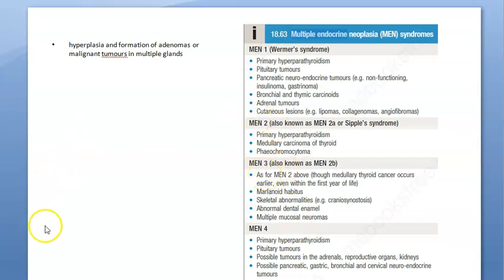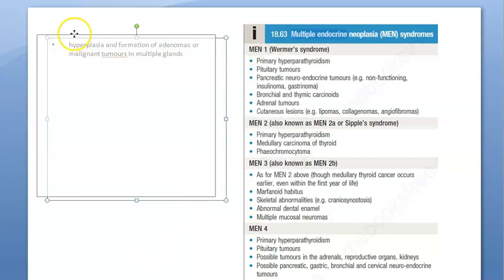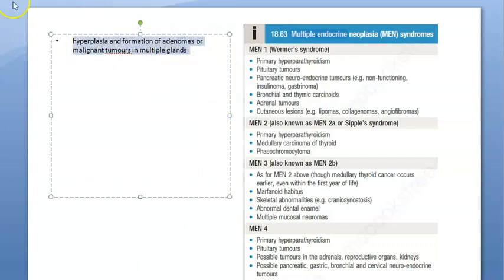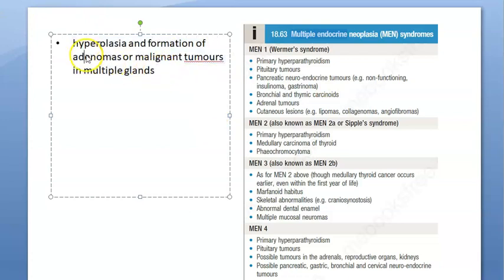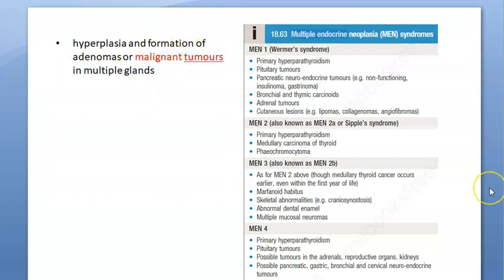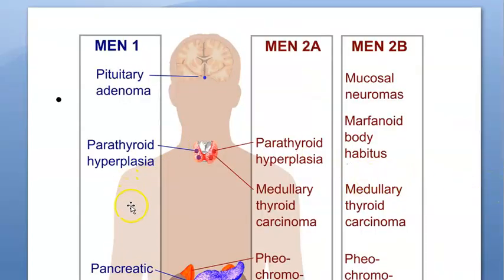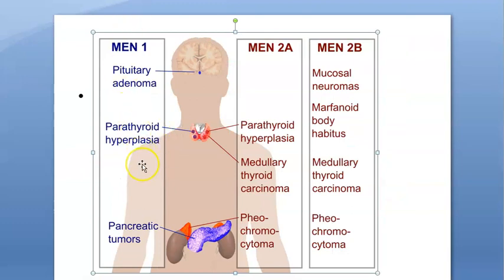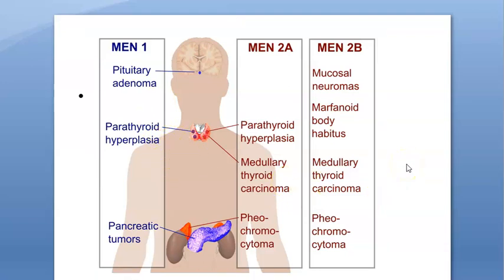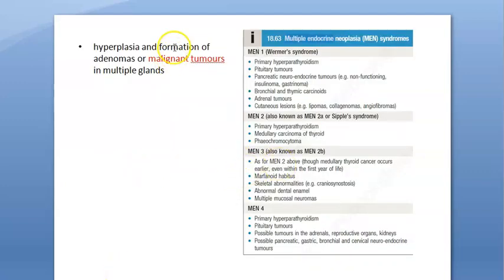There is hyperplasia and formation of adenomas or malignant tumors in multiple glands. There can be adenoma, which is a benign condition, or there can be malignant tumors in multiple glands. These people will have multiple conditions - that's what is unfortunate. They can also have other genetic diseases like pheochromocytoma, von Hippel-Lindau syndrome, neurofibromatosis, and multiple other genetic issues.